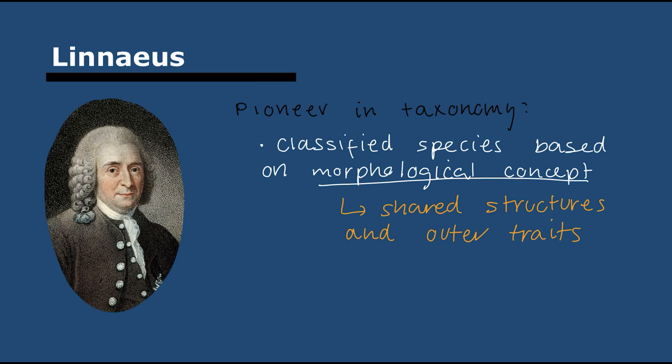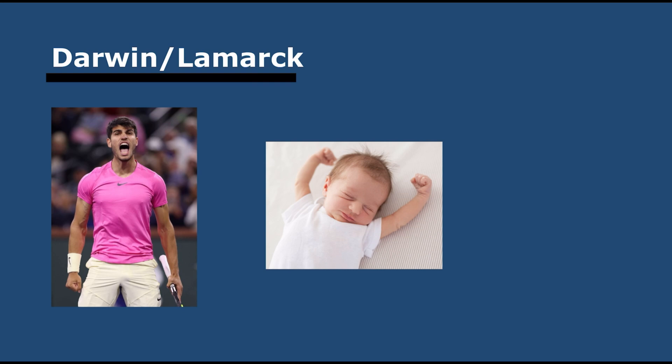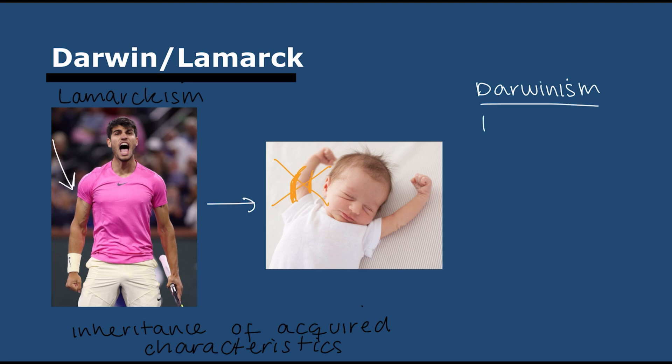Next we have Darwin versus Lamarck. Lamarck founded Lamarckism, which is the thought that acquired characteristics get passed on to progeny. For example, Carlos Alcaraz, a tennis player, has a bigger right arm—that doesn't mean his baby would have a larger right arm. Darwin proposed that only heritable characteristics can get passed on to progeny. This was a revolution that disproved Lamarckism.